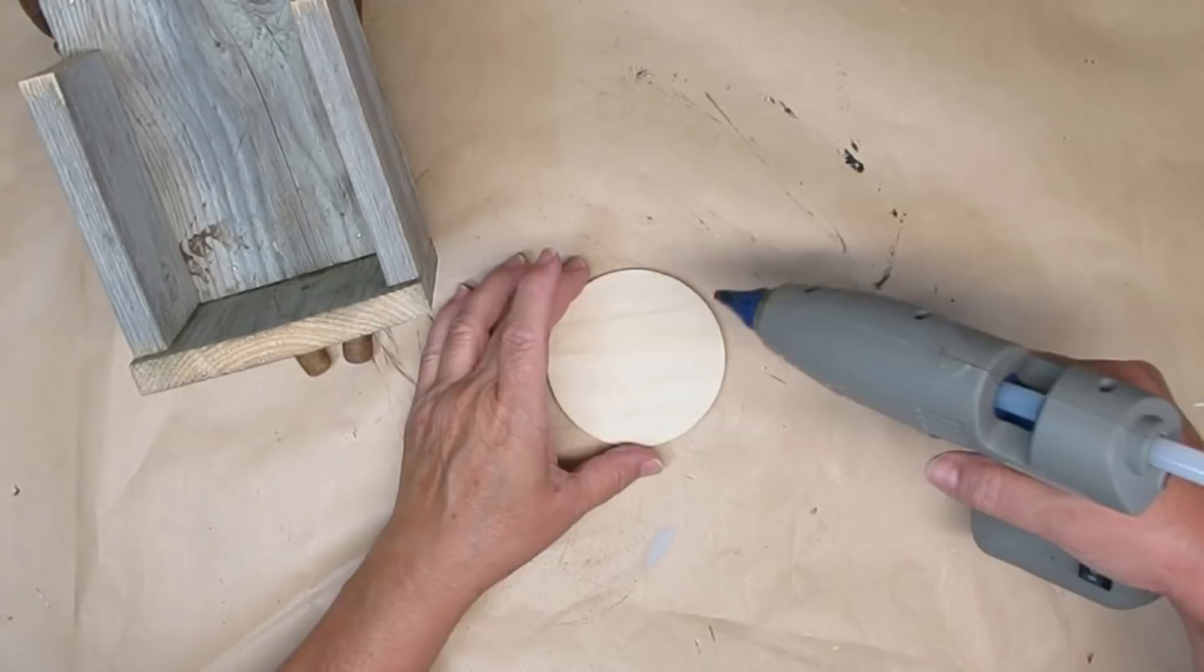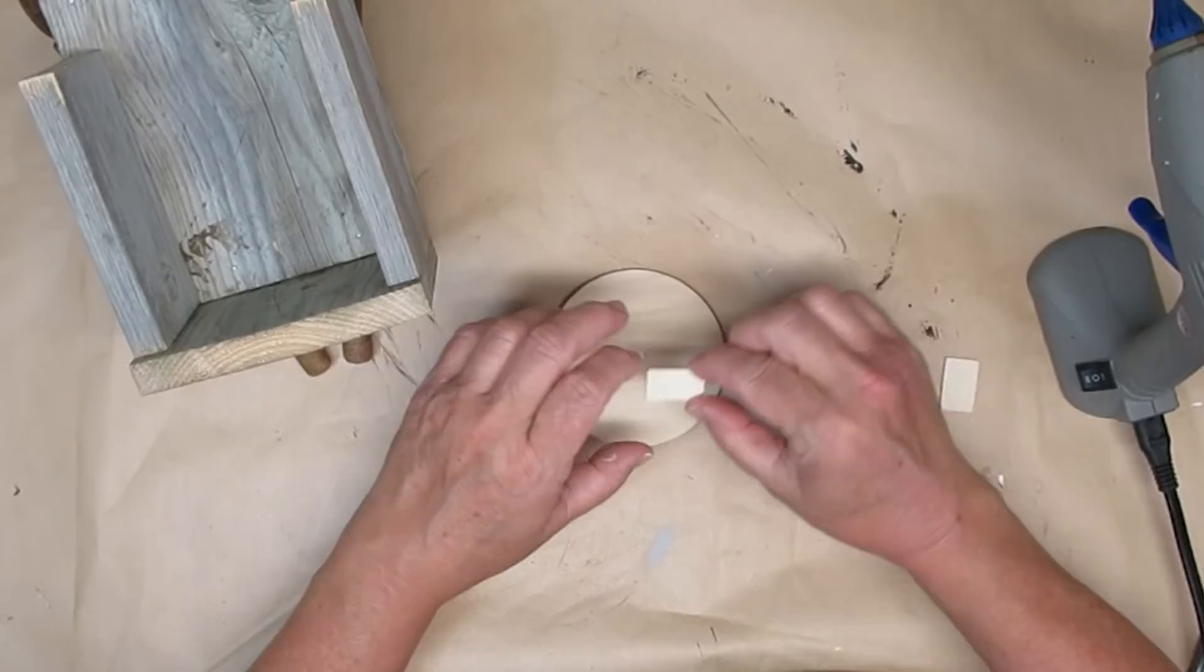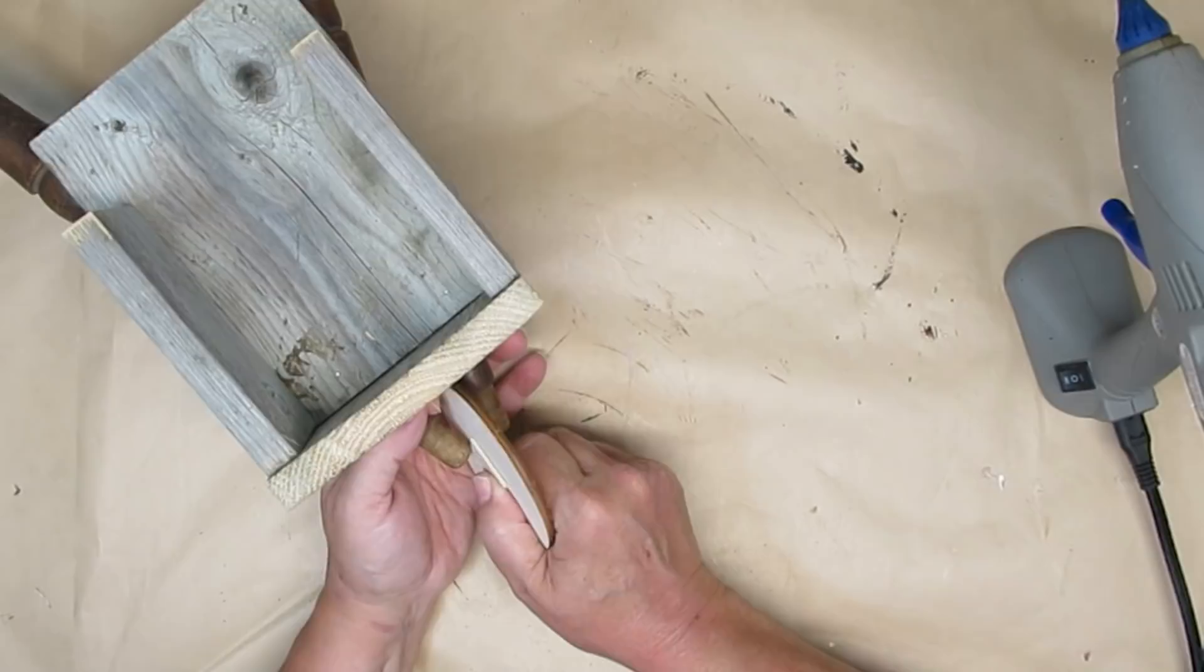Now I'm working on the wheel. This is a round coaster that comes in a pack of four from the Dollar Tree. I'm just adding some tiny little pieces of wood just to make the center portion a little bit thicker so it will stay nice and snug in between the two spindles.